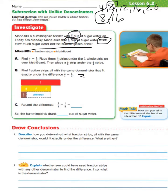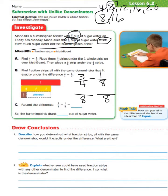So for 3 fourths minus 1 eighths, the first step is to find our common denominator, which is 8. We list 8 as the denominator for both. Just like we did with adding fractions with unlike denominators, we do the same thing with subtraction: 8 divided by 4 equals 2, and 2 times 3 equals 6. So the equivalent fraction of 3 fourths with denominator 8 is 6 eighths.